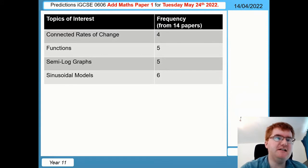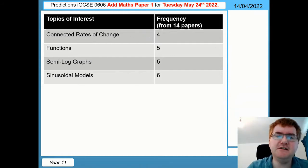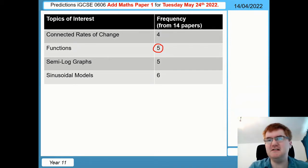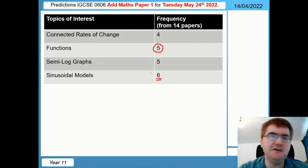My first section here is so-called topics of interest. These topics generally appear on paper two rather than paper one. Particularly functions is something I would like to label here. This has appeared on paper one, but be aware that if it doesn't appear on paper one, it's more likely to appear on paper two. Likewise, sinusoidal models here with six out of 14. This can be integrated into other questions much more so than on standard maths courses.